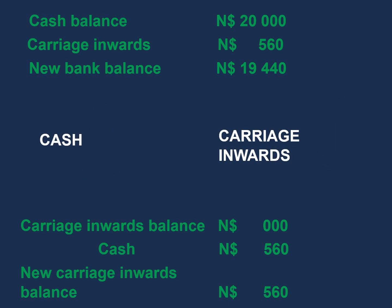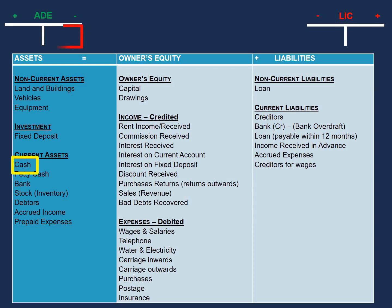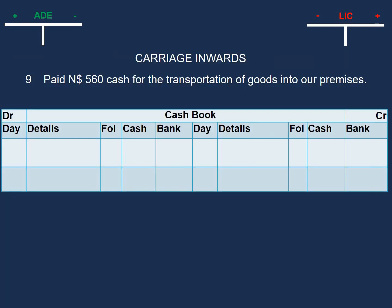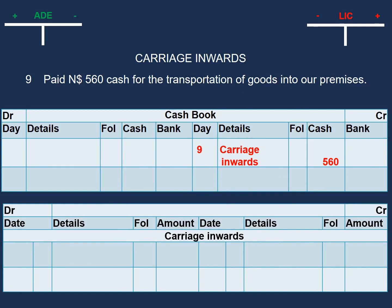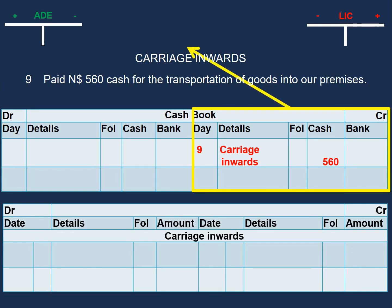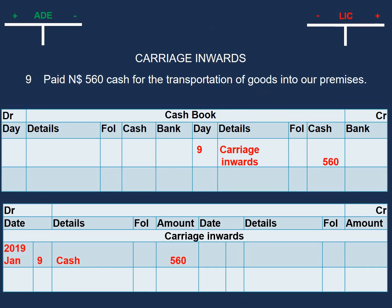Now let's classify the two accounts. We have cash, which is an asset, and since our asset is decreasing, we would enter that on the credit side. And we have carriage inwards, which is an expense, and our expense has increased, so we would enter that on the debit side. To complete the transaction, we open our carriage inwards account, then credit our cash book with 560 in the cash column, with the description 'carriage inwards.' Then we debit our carriage inwards account with 560, with the description 'cash.' This completes our double entry process.